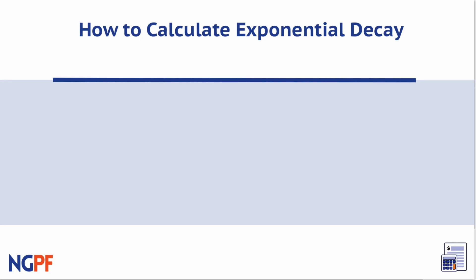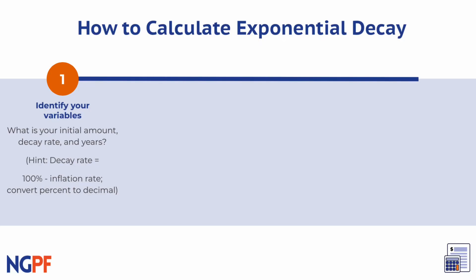Alright, here's a recap on calculating exponential decay. First, you must correctly identify and substitute the variables that you need, in this case initial principle, decay rate, and time in years. Remember to convert your decay rate from a percent to a decimal.